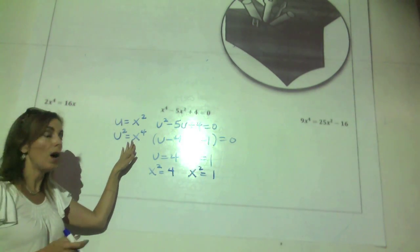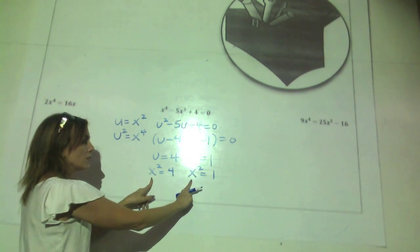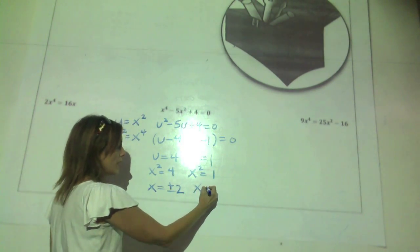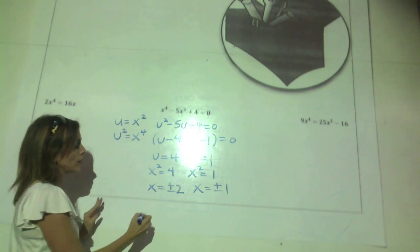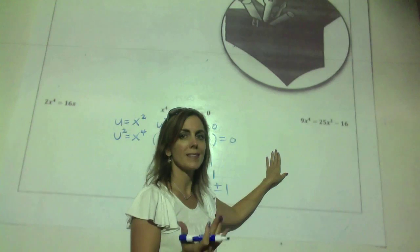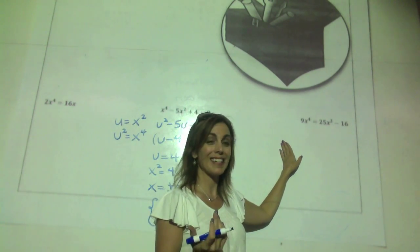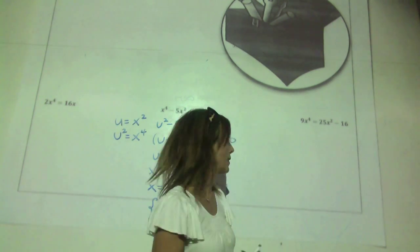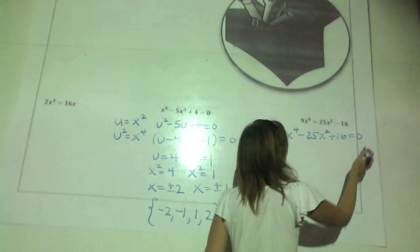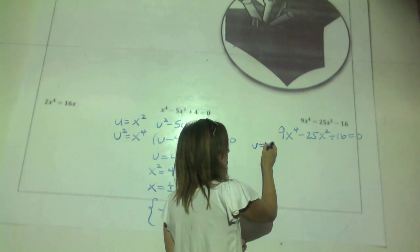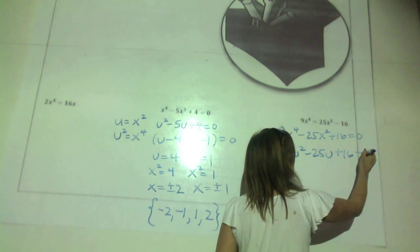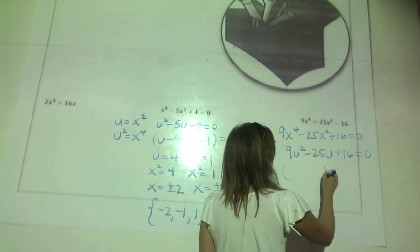Applying the quadratic formula: negative 2 plus or minus radical of 4 minus 4 times 1 times 4, all over 2. Simplifying: negative 2 plus or minus radical negative 12, all over 2. Simplifying radical negative 12 gives 2i radical 3. So we have negative 2 plus or minus 2i radical 3 over 2, which simplifies to 1 plus or minus i radical 3. Our full solution set is 0, 2, 1 plus i radical 3, and 1 minus i radical 3.